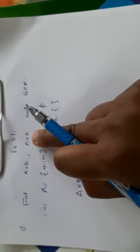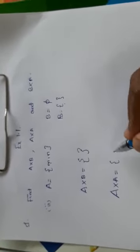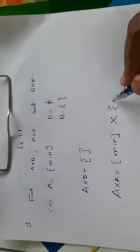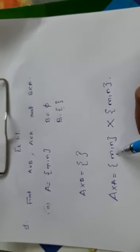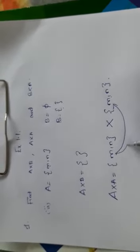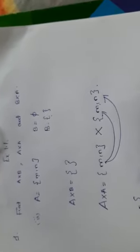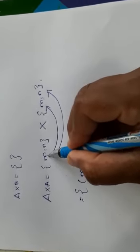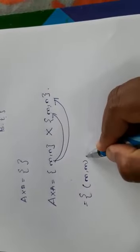Next, you have to find out A cross A. That means A set is {m, n} and with that you have to take the cartesian product with A again. First, you have to take the first element from A and pair it with the first element. So the first ordered pair is (m, m).